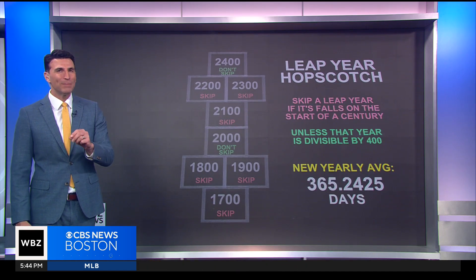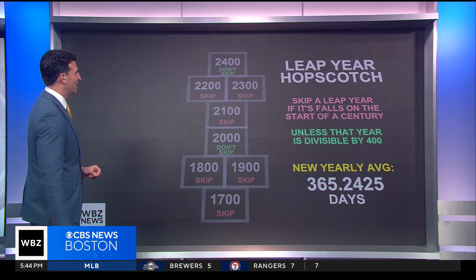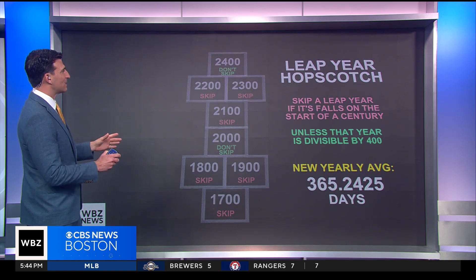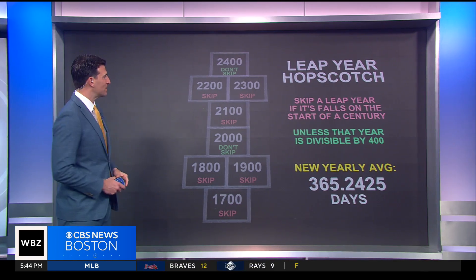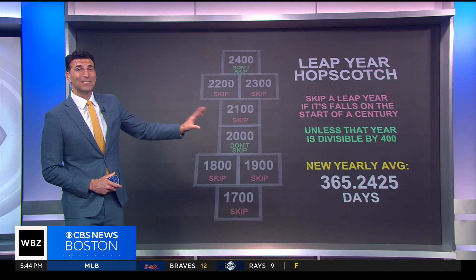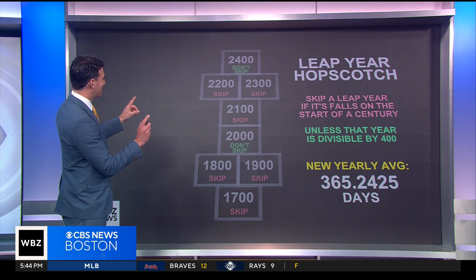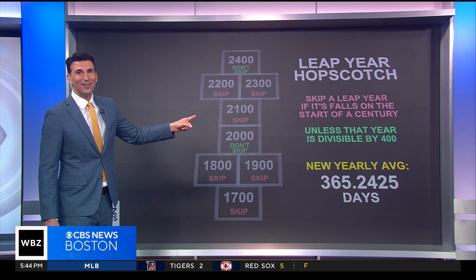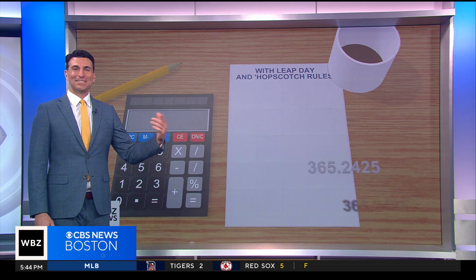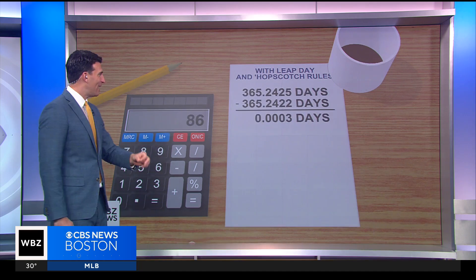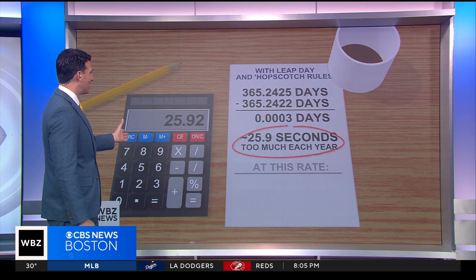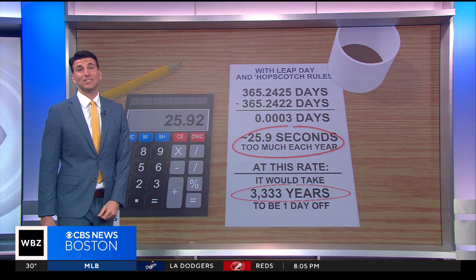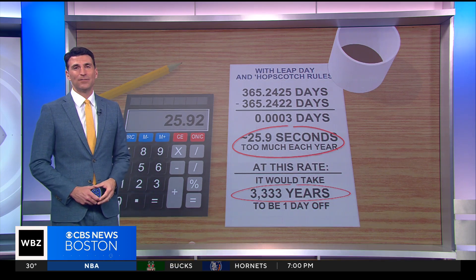Now we still have a little bit too much, and in a century we're 18 hours off. It's not a huge amount of time, but still not balancing out just right. This is the part most people probably forget — we do a little bit of a leap year hopscotch. We skip a leap year if it falls on the start of the century, unless it's divisible by 400. That means we didn't skip it in 2000, but in 2100 we are going to skip it. Once you do that last little bit of math, now it would take over 3000 years to be a day off.